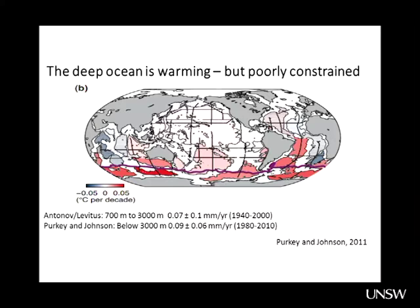Perky and Johnson have used repeat sections from the World Ocean Circulation Experiment and earlier observations, along with an ongoing program of repeat sections to map this horizontally. The largest changes are in the Southern Ocean, emanating from there and propagating northward through the Atlantic, into the Pacific, and into the Indian Ocean.